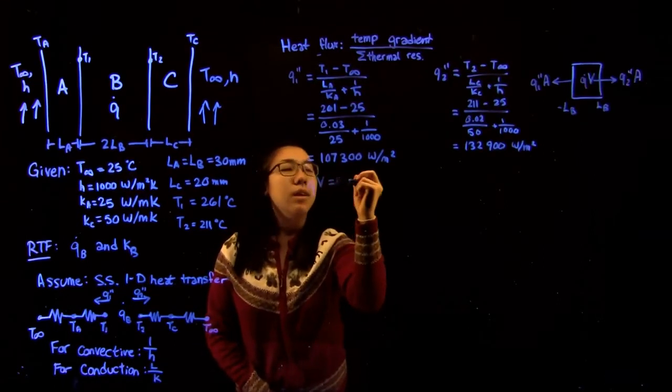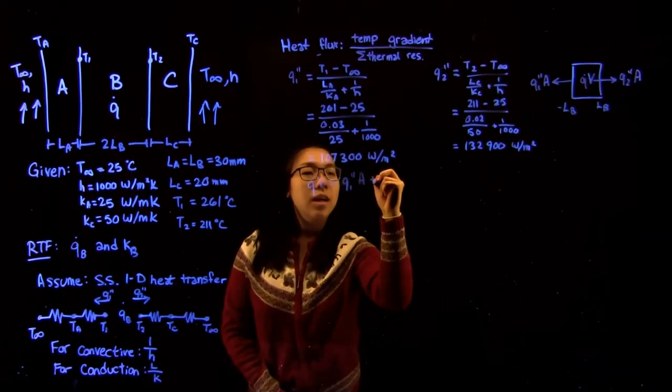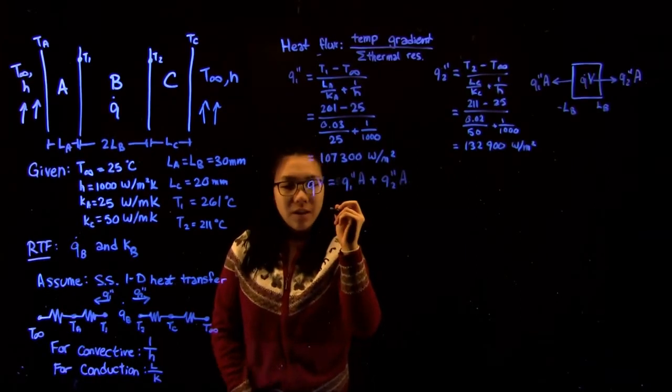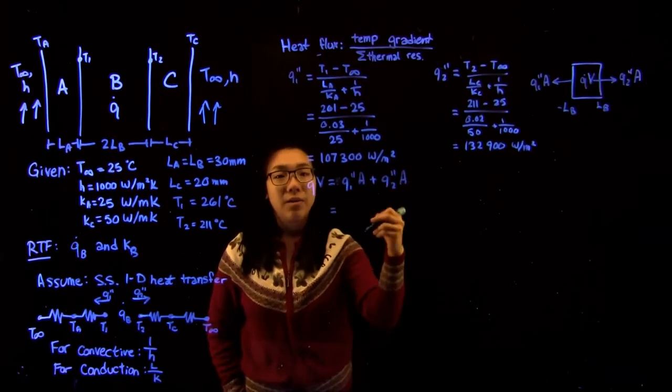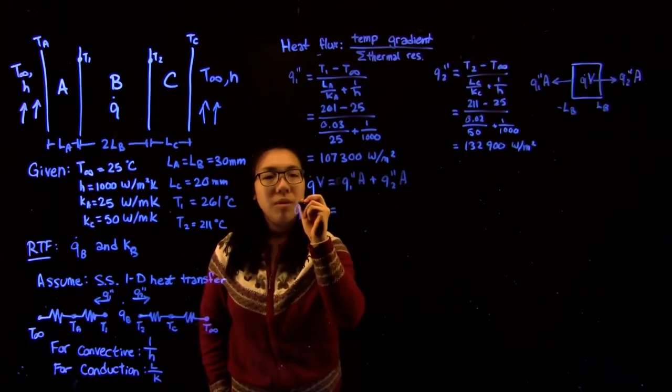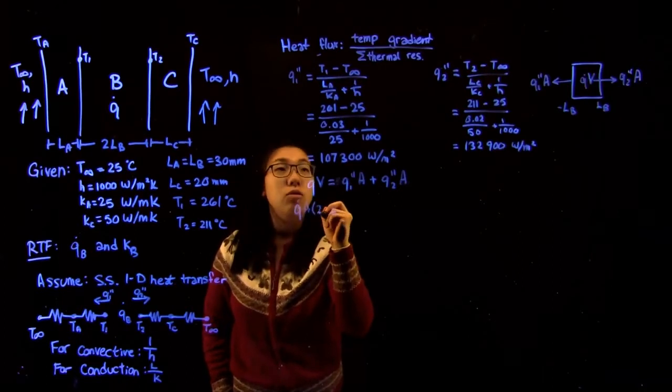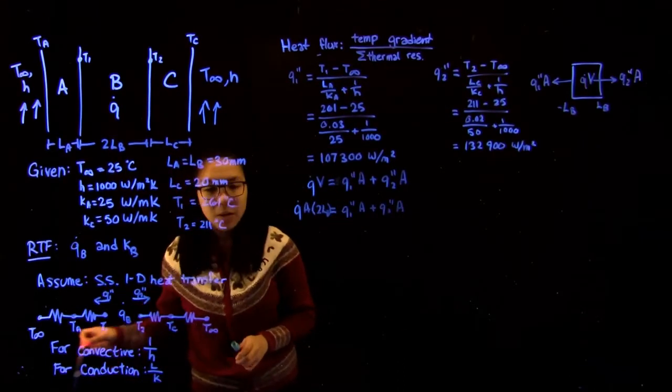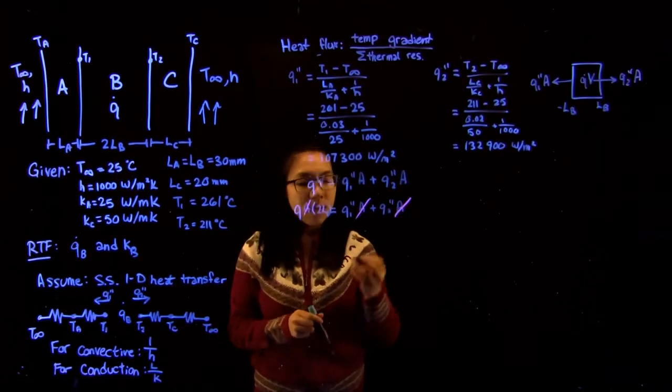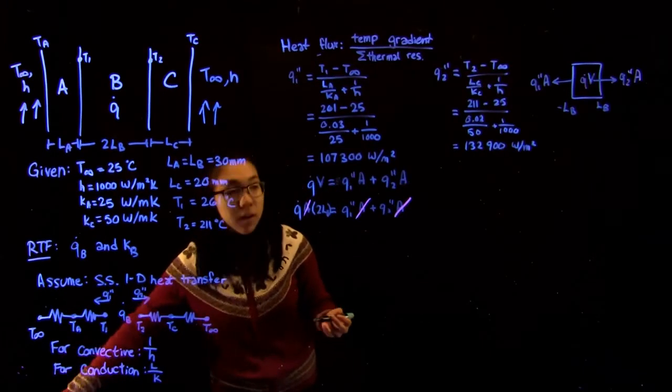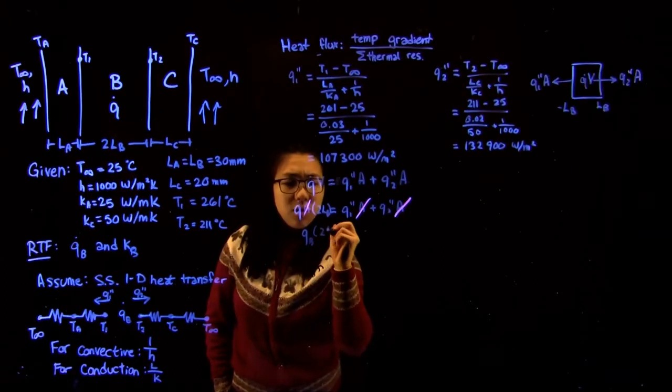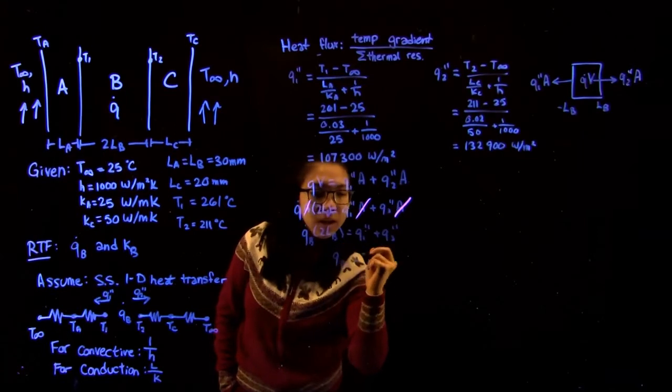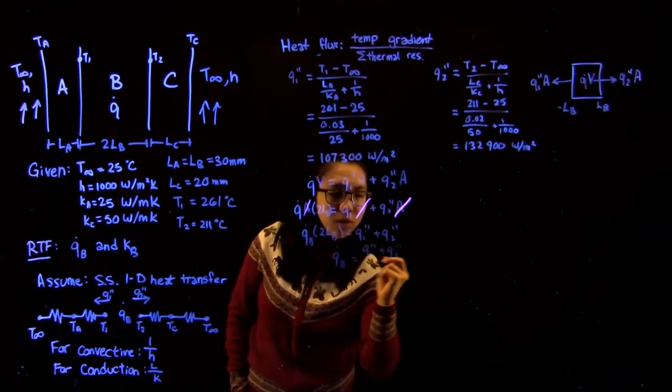That says that QV is equal to the flux of 1 times the cross-sectional area plus Q2 times the cross-sectional area. Since we can consider that we have a constant cross-sectional area, we want to divide out this area because we're not given these parameters. On the left side we have that volume is equal to area times the length which is 2LB. We can now cancel out the areas to give an energy balance of QB times 2LB is equal to the sum of the fluxes. If we solve for QB we get Q1 plus Q2 over 2LB.